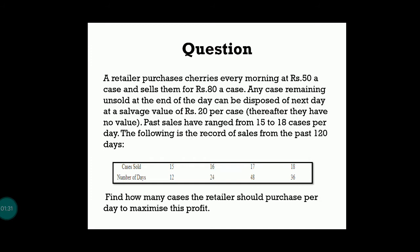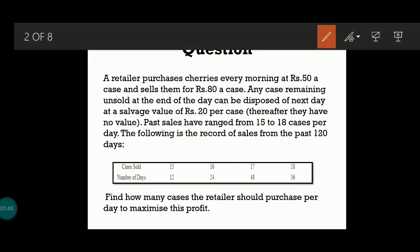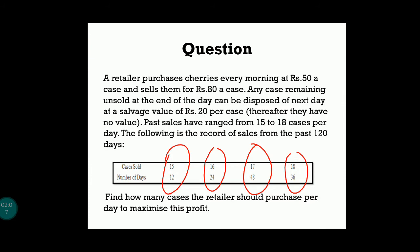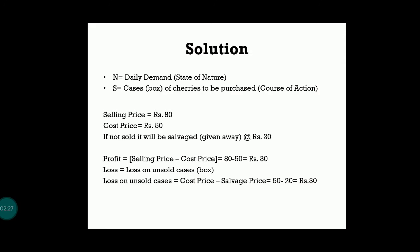The sales data given for the past 120 days shows: for 12 days, 15 cases were sold; for 24 days, 16 cases were sold; for 48 days, 17 cases were sold; and for 36 days, 18 cases were sold. So demand ranges from 15 to 18 boxes of cherries per day. We need to find how many boxes the retailer should purchase per day to maximize profit — this is an EMV problem.